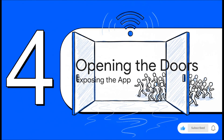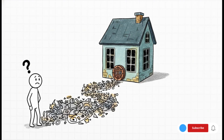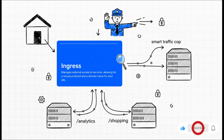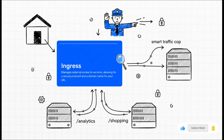Now our application is running, stable, and scalable — but still locked away from the outside world. We could use a special type of service to expose it, but what you usually get is a clunky IP address with a random port number. That's fine for testing, but not the clean, professional URL we want for users. We need a proper front door: ingress. Think of ingress as a smart traffic cop for your whole cluster. It routes traffic based on the web address — myapp.com/analytics can go to one service, while myapp.com/shopping goes to a completely different one — with clean URLs, load balancing, and security all handled.